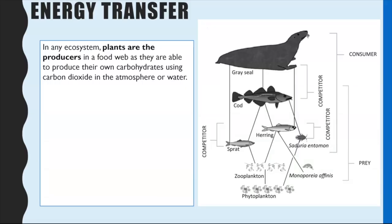So energy transfer — this bit is quite similar to GCSE because it does link to energy being transferred through a food web, which is something you covered at GCSE. In any ecosystem you should be familiar with the concept that plants are the producers, so they're always going to be at the start of a food chain. They're core producers because they produce their own carbohydrates or organic matter using carbon dioxide from the atmosphere and water.